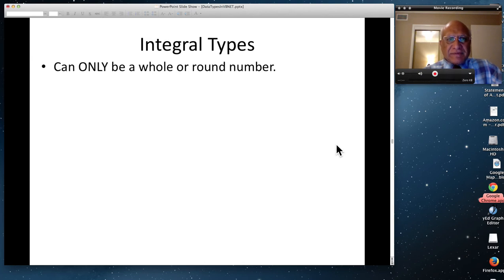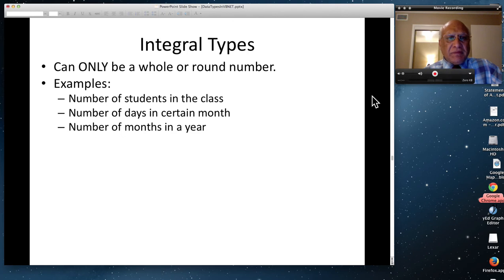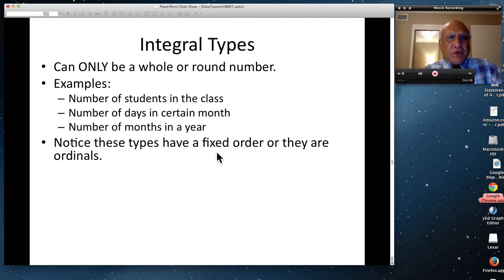Let's talk about integral types first. Can only be whole or round number. We are talking about general characteristics first. Examples are number of students in the class cannot be 10.5 students. It's either 10, 9 or 11. Or different whole number. Number of days in a certain month. February has 28. January has 31. March has 31. April has 30. Number of months in a year. 12 months. Whole number again. Round number. Notice that these types have fixed order. And in computer science we call them ordinals.